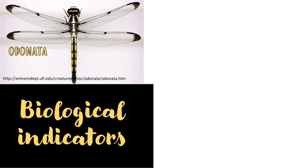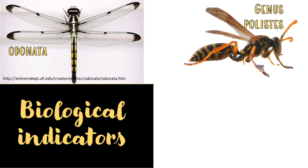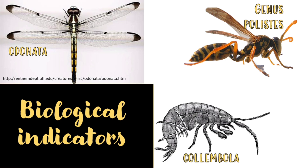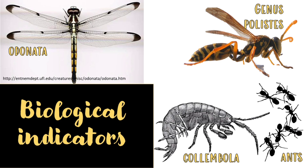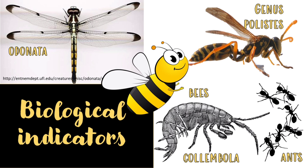Seventh, they are biological indicators of the environment. For example, dragonflies are bioindicators of water quality — female dragonflies lay their eggs in or near fresh waters only. The genus Polistes, a wasp, is a promising bioindicator of lead pollution. Collembola or springtails are bioindicators of pollution by heavy metals, pesticides, and water acidity. The density of ants serves as a bioindicator in degraded and reforested areas, while bees are good bioindicators of trace metals, radioactivity, pesticides, herbicides, and industrial pollutants.